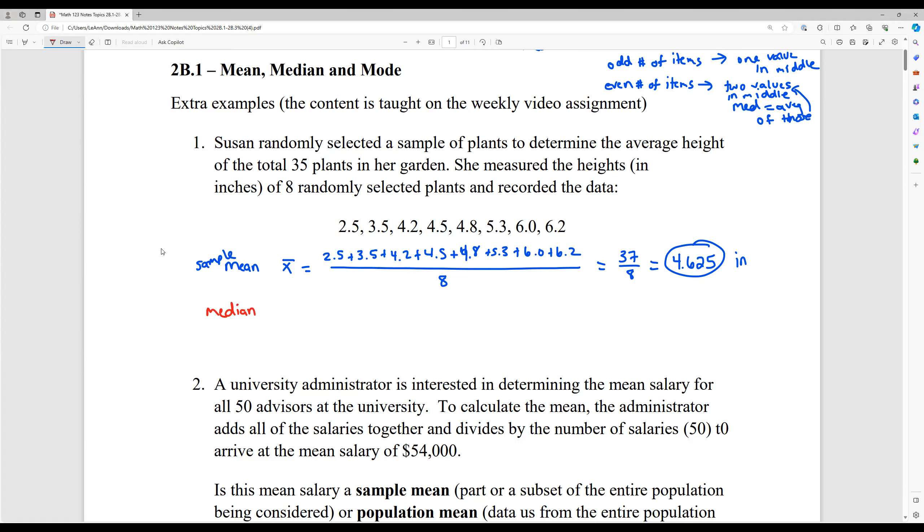And since our data is listed from least to greatest, this will be easy to find. So we have one, two, three, four, five, six, seven, eight, we have an even set of items. So there's going to be two numbers. You'll notice that if the middle is actually here, that's what splits our data set into equal parts, but we need to find that number by averaging the two on either side of it. So 4.5 plus 4.8 divided by two, that'll give us our median. In other words, what's just halfway between those two values? And that is going to be 9.3 divided by two, which when we divide that on the calculator, we get 4.65.